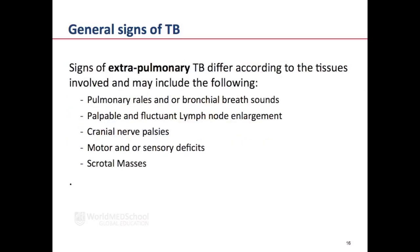The signs of TB differ according to the tissues involved. In the lung, there may be pulmonary crackles and bronchial breath sounds. With lymph node enlargement, there may be palpable and fluctuant lymph nodes. There may be cranial nerve palsies in TB meningitis, and motor and sensory deficits. In epididymal TB, scrotal masses may be found.